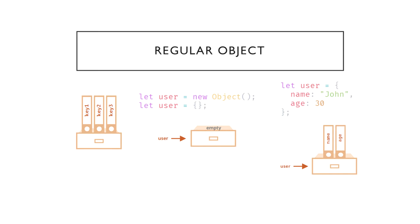An empty object or empty cabinet can be created using one of two syntaxes: either using the object constructor with new Object, or using figure brackets. The second way is preferred — it's really rarely when you would need the object constructor and the figure brackets is way shorter.